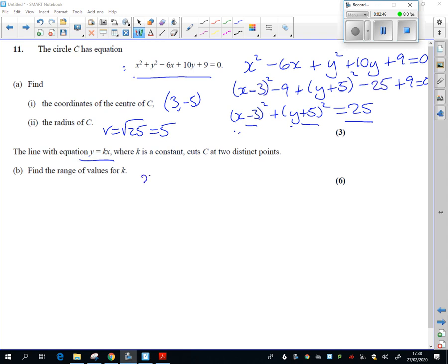Your first mark comes from substituting kx in for y. So where it says y squared, it's kx squared. Where it says 10y, it's 10 times kx. And then plus 9 equals 0. So there's your first mark.